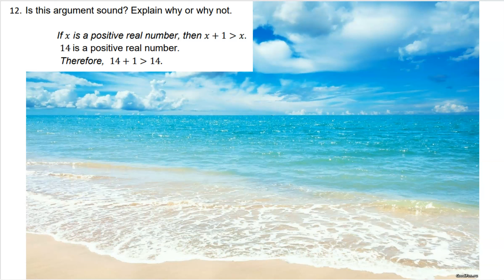First of all, it says if-then, right? So we know premise one is going to be if something then something, so we would say if P then Q. This right here, 'x is a positive number,' that is P, and 'x+1 is greater than x' is Q. So we have if P then Q for our first premise.